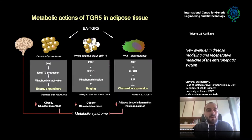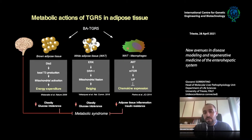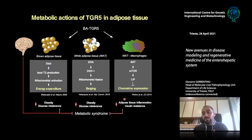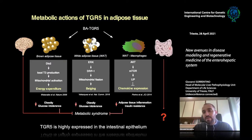TGR5 is expressed in many tissues including the brain, adipose tissue, and immune cells such as macrophages. In all these tissues, TGR5 activation by bile acids is associated with reduction of metabolic syndrome phenotypes such as obesity, glucose intolerance, and inflammation. TGR5 is also expressed in the intestinal epithelium; however, its role in this tissue is largely unknown, so we decided to focus our attention there.